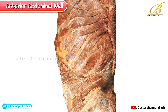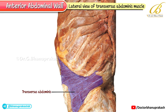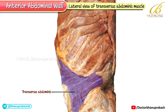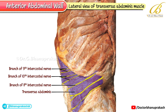In this image, we are looking at the lateral view of the transversus abdominis muscle. To make this muscle more visible, both the external oblique and the internal oblique muscles have been excised. An important highlight of this image is the neurovascular plane, which lies just superficial to the transversus abdominis. Within this plane, you can identify the 9th, 10th, and 11th intercostal nerves, along with the subcostal nerve and the iliohypogastric nerve. These nerves supply the muscles and the overlying skin of the abdominal wall.